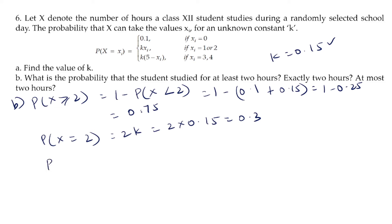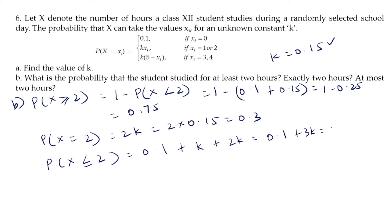Probability of at most 2 hours: P(X ≤ 2) = P(X=0) + P(X=1) + P(X=2) = 0.1 + K + 2K = 0.1 + 3K = 0.1 + 0.45 = 0.55.